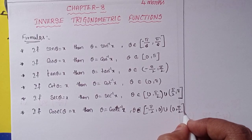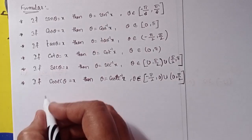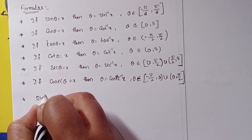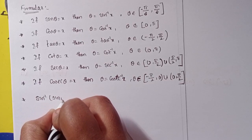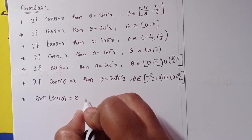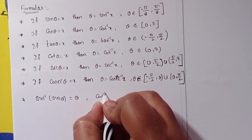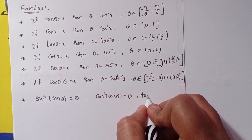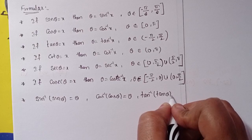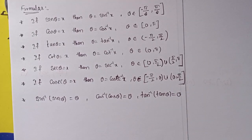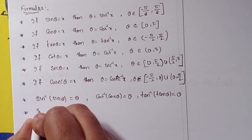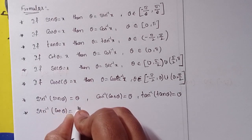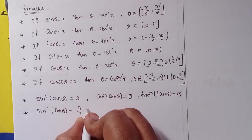Next formulas: sin⁻¹(sin θ) = θ, cos⁻¹(cos θ) = θ, tan⁻¹(tan θ) = θ. Also, sin⁻¹(cos θ) = π/2 − θ.